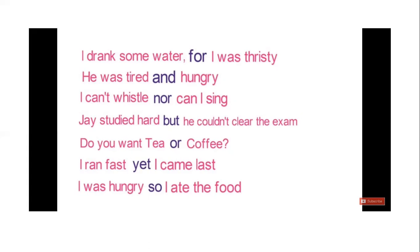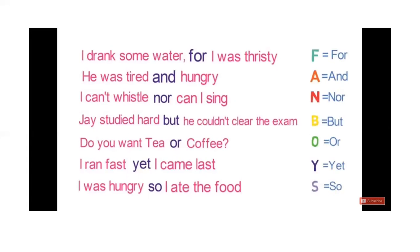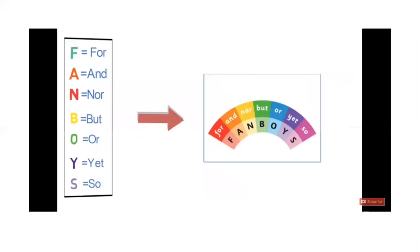There is a way to memorize these seven basic conjunctions. The way is: F for 'for', A for 'and', N for 'nor', B for 'but', O for 'or', Y for 'yet', S for 'so'. This gives us the word FANBOYS — the easiest way to remember these seven basic conjunctions.